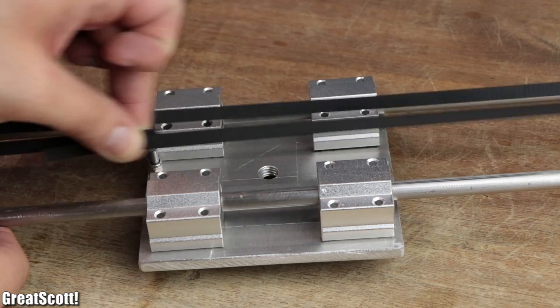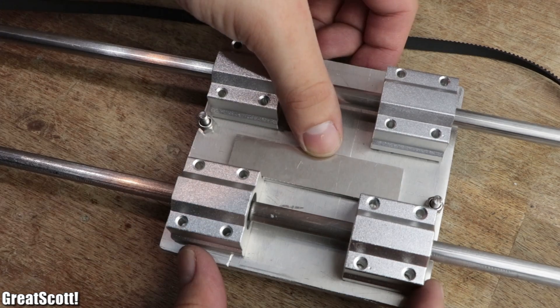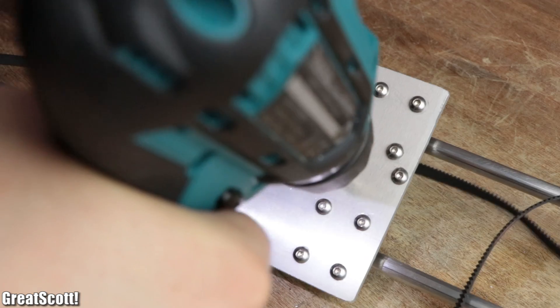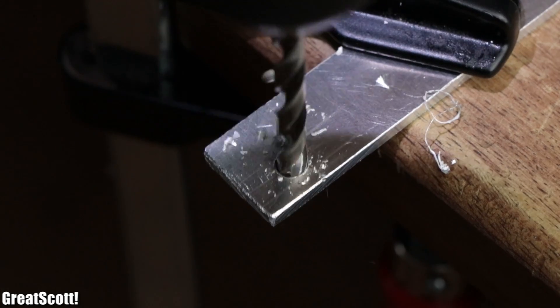For which the small aluminum piece that I created earlier was necessary. I positioned it in the middle of the platform, marked the two required drill holes, and created them with a 5 millimeter drill.